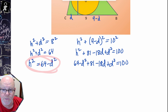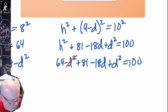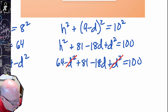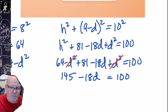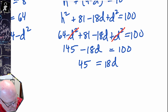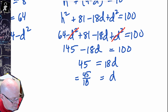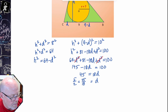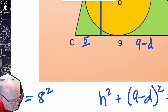The D² terms cancel. We get 145 − 18D = 100, so 45 = 18D, giving D = 45/18, which reduces to 5/2. Now I can replace D with five-halves.